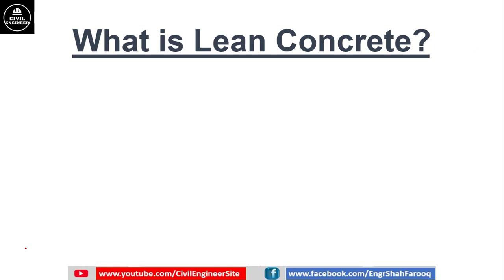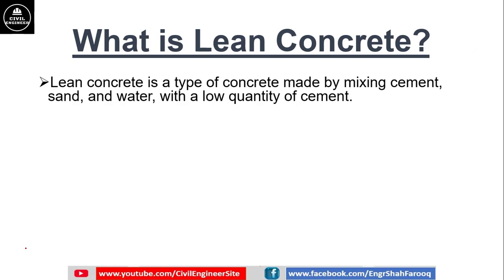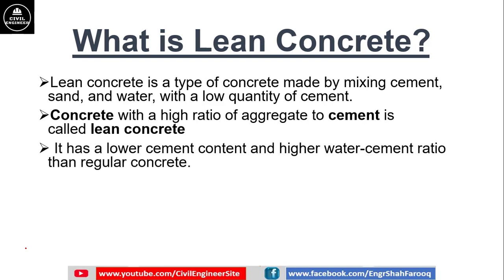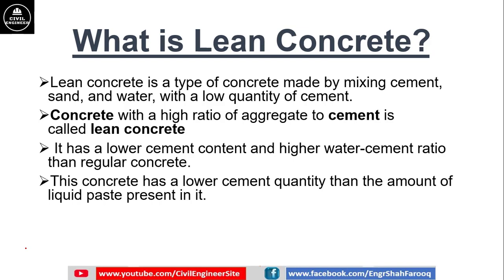First, we will discuss what lean concrete is. Lean concrete is a type of concrete made by mixing cement, sand, and water with a low quantity of cement. Concrete with a high ratio of aggregate to cement is called lean concrete. It has a lower cement content and higher water-cement ratio than regular concrete. In simple words, the amount of cement is less compared to other concrete types.